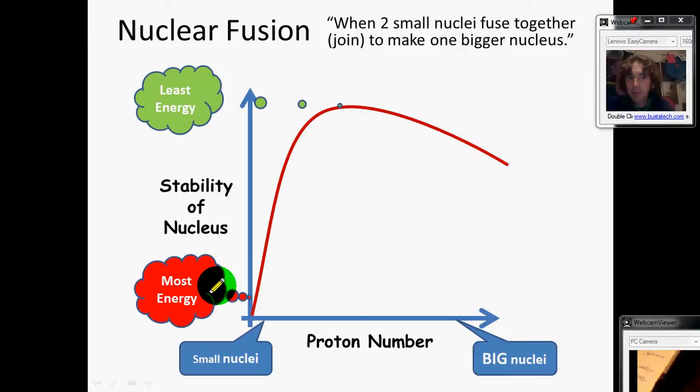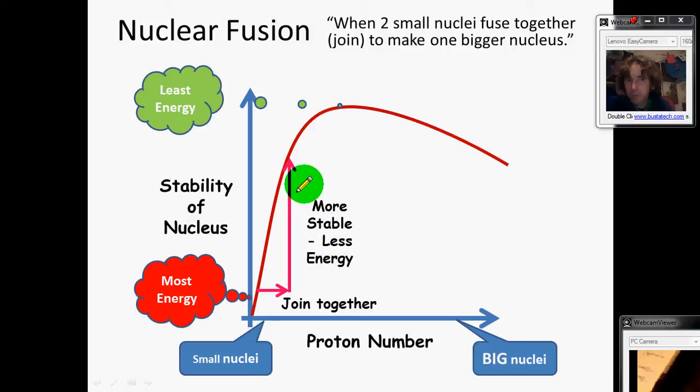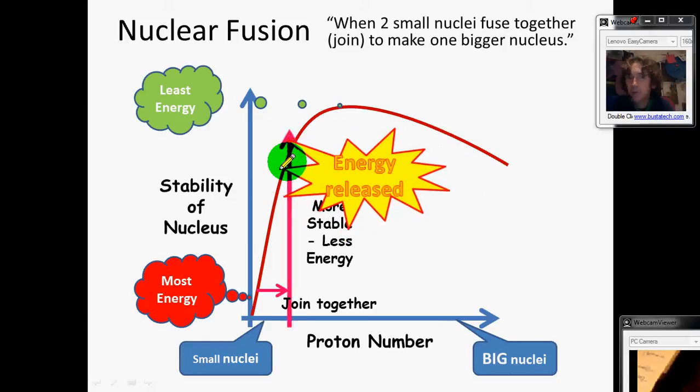Here's our graph. We're starting down with these tiny ones down here which are the least stable—they've got the most energy. We link the two together and we go from here to somewhere up here in terms of proton number. You've got a big difference in energy—more stable, so they've got less energy in the nucleus. The energy that was in the nucleus is now going to be released. That's the energy that gets released in a nuclear bomb or in a star like the sun.